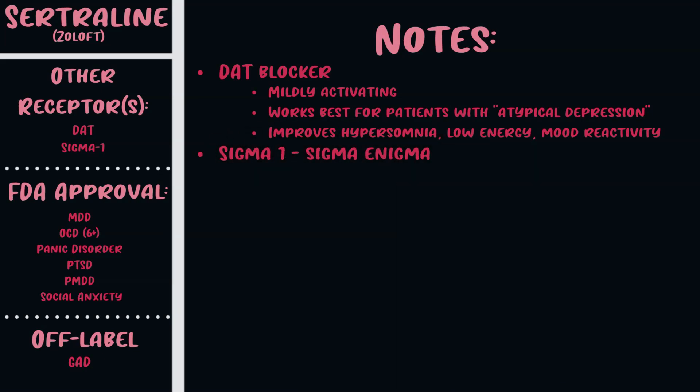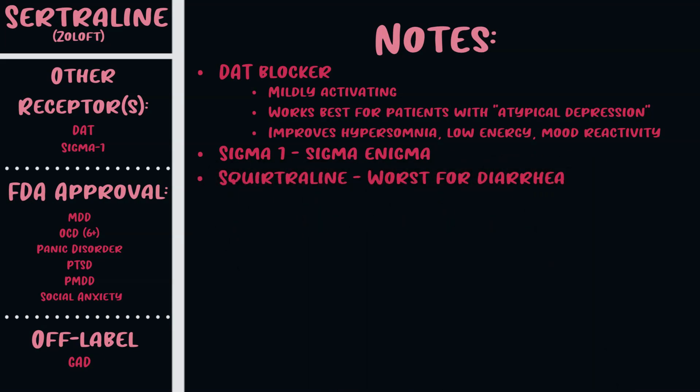Zoloft is also an antagonist at sigma-1. We don't really know what sigma-1 is fully involved in — it's called the sigma enigma — but it might help with anxiety effects and psychotic depression, where Zoloft seems to have an advantage. Notably, all the SSRIs that are particularly good for OCD also block the sigma-1 receptor.